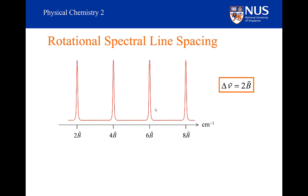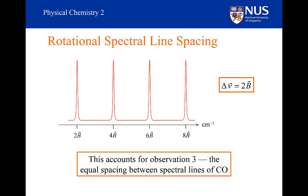So this is what the spectrum will look like. The difference between any two peaks is equal to 2B. I am showing the energies of each spectral line generated for the transitions from J equals 0 to 1, from J equals 1 to 2, from J equals 2 to 3, and from J equals 3 to 4. The lines are indeed equally spaced. This explains that part of Observation 3 that the lines are equally spaced for molecules such as carbon monoxide. We have been able to explain the spectrum of carbon monoxide just by solving the Schrödinger equation.